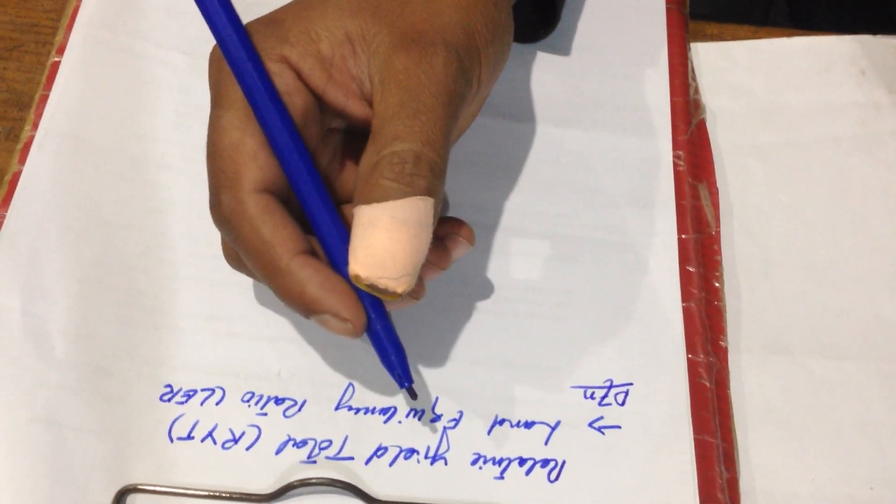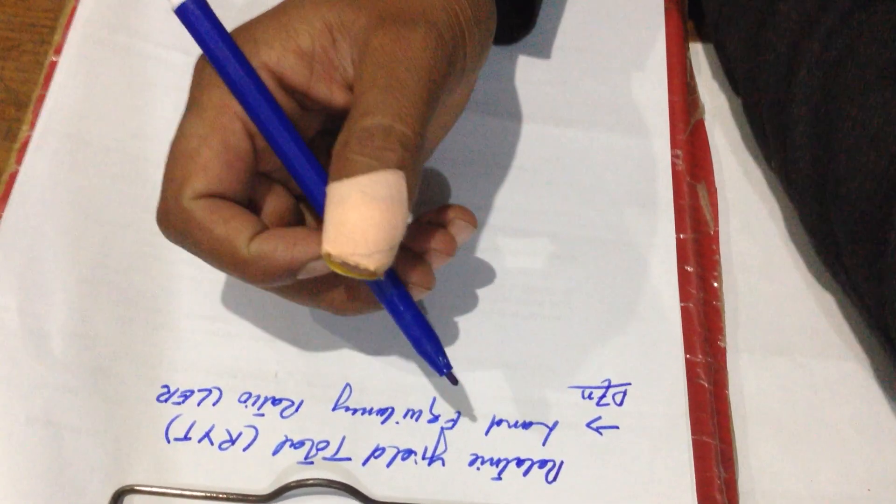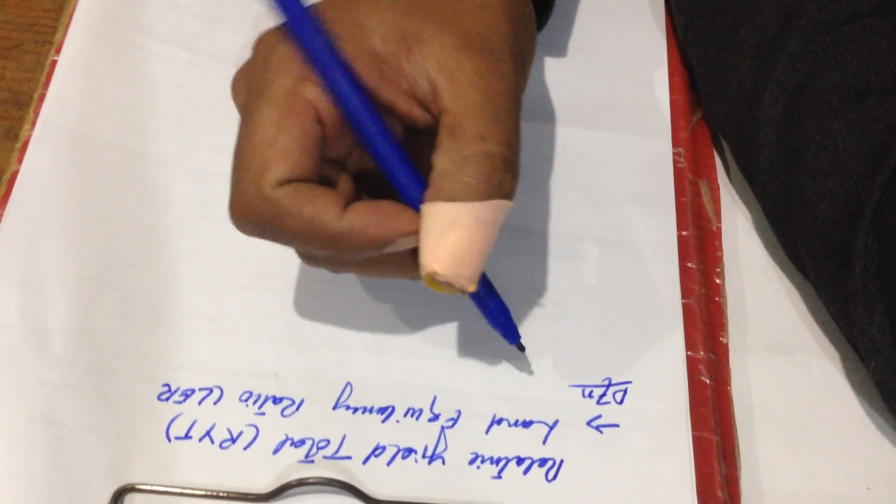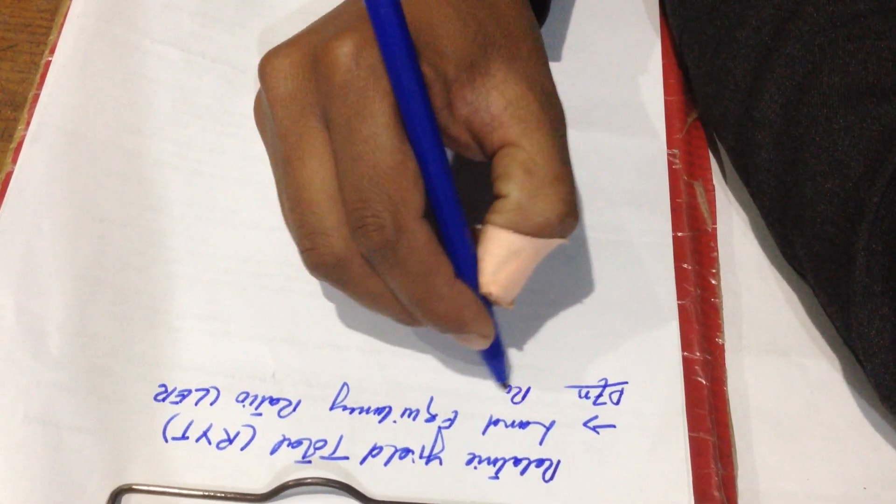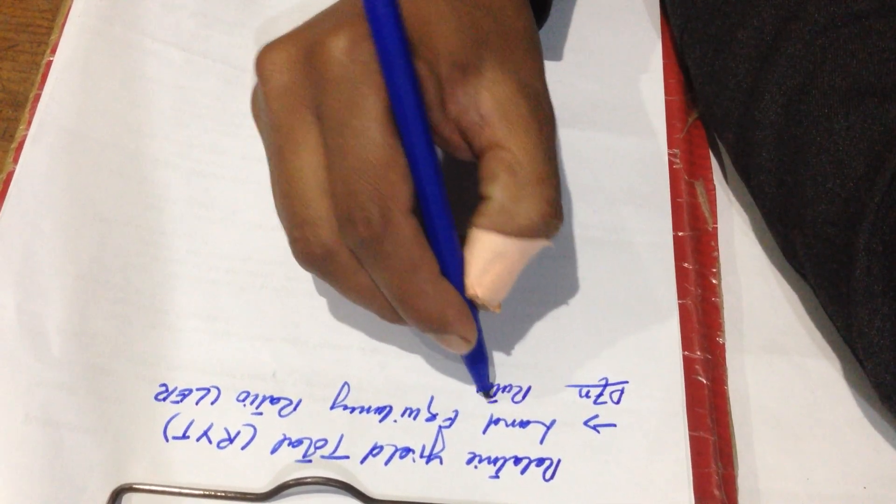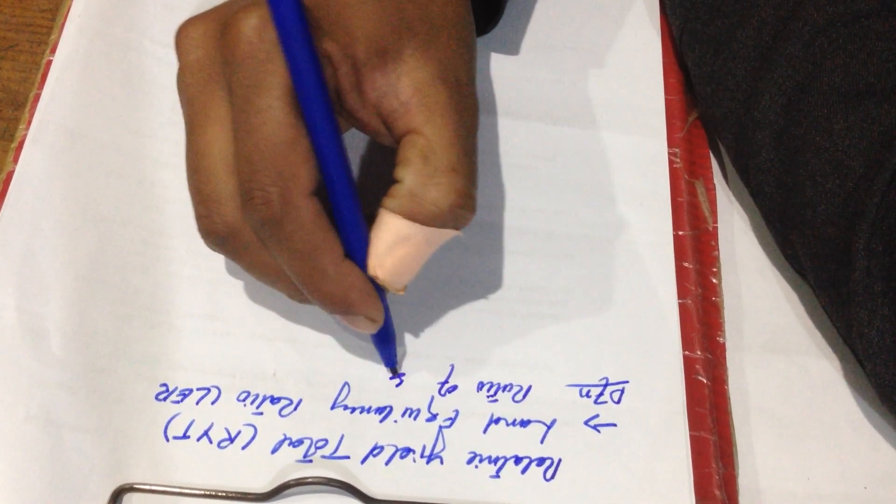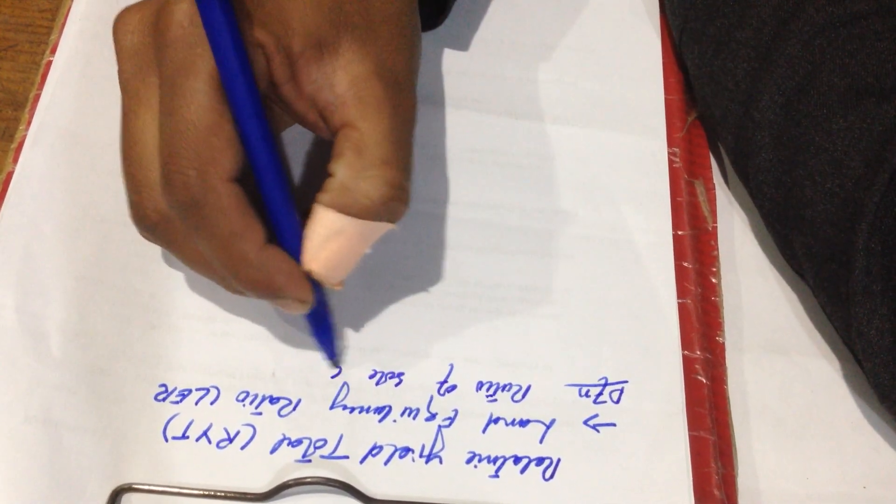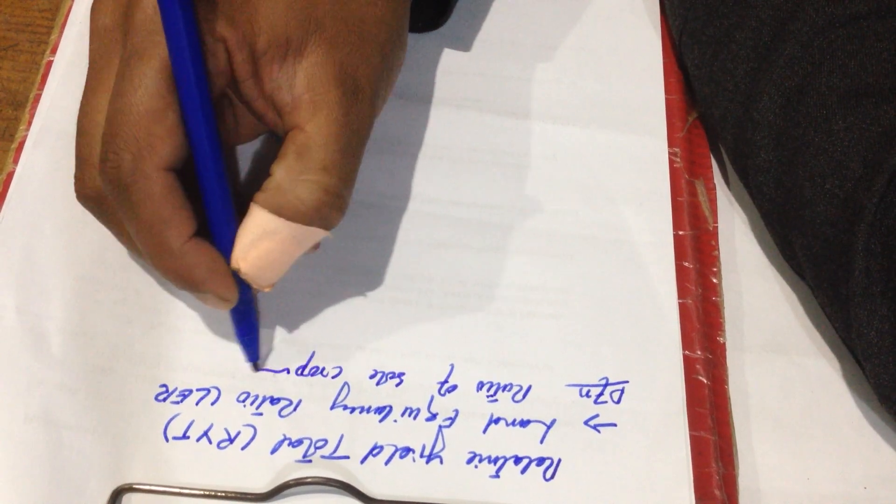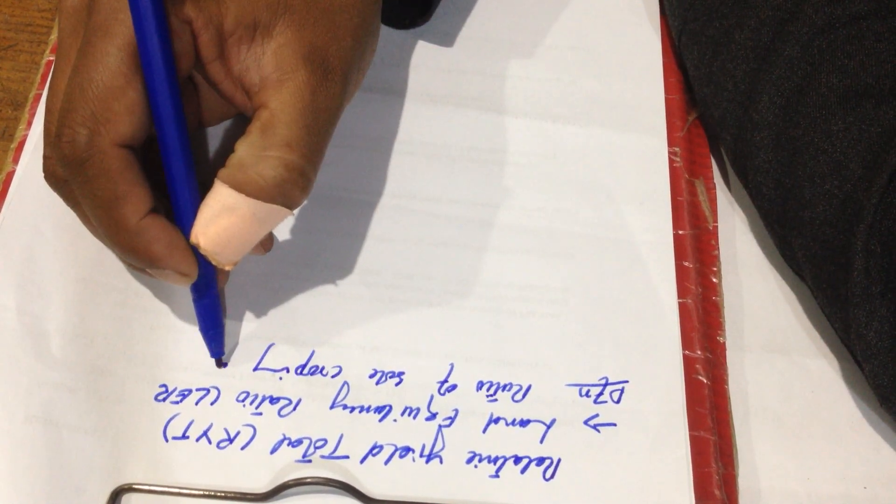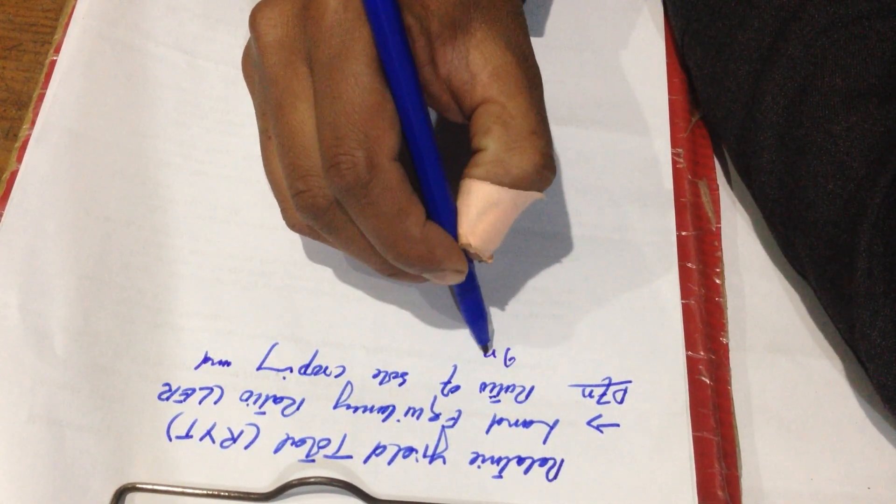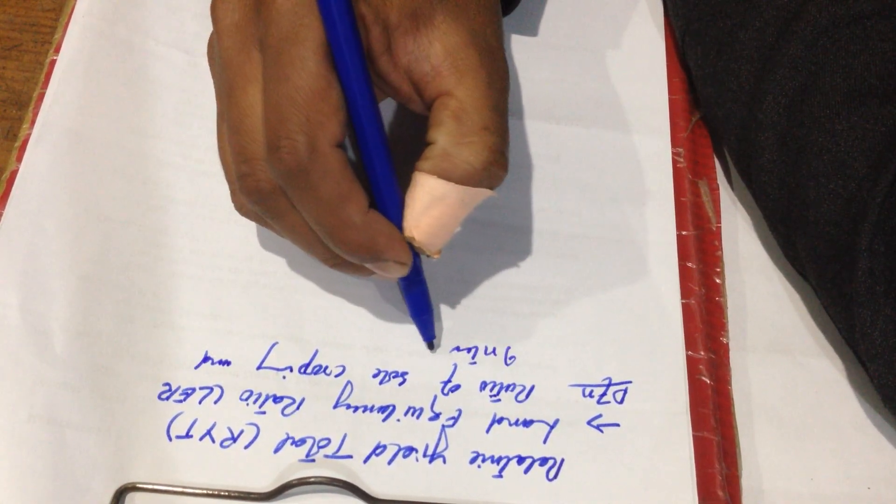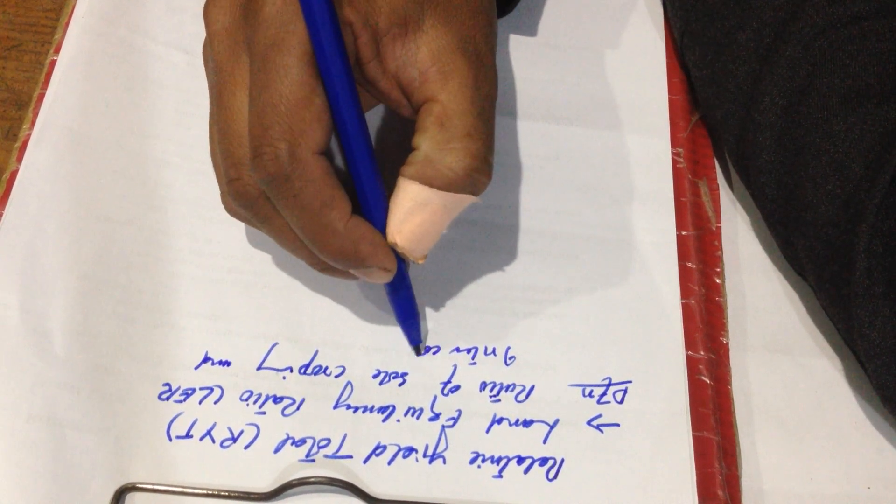First of all, we should define what this term means. Relative yield total is the ratio of sole cropping and intercropping.